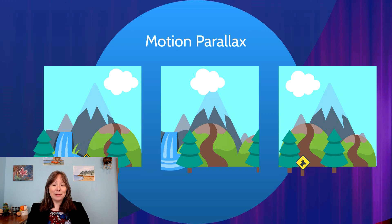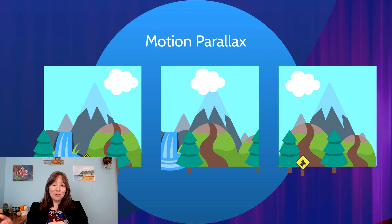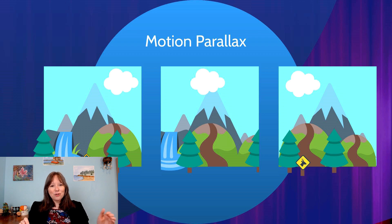The last depth perception cue is motion parallax. When walking or driving, objects in your visual field change at different rates based on how far away they are. Nearby road signs and trees pass by very quickly; a waterfall and hills pass more slowly; a distant mountain barely seems to move at all. Things that move past you slowly are further away, while things that fly by quickly are much closer.